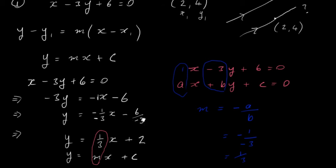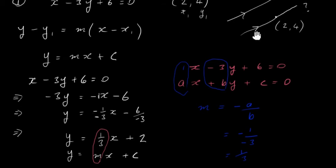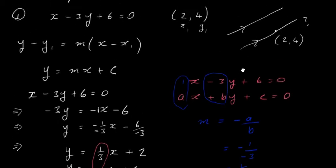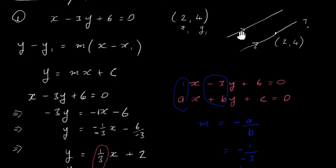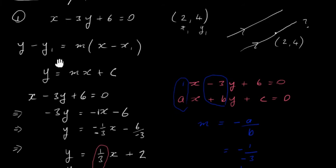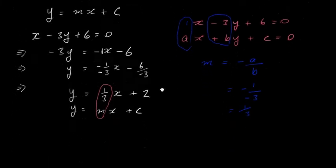Now let's find the equation of the parallel line. We have the point (2, 4) on the line and we've just worked out that the slope is one-third. So we substitute into y minus y1 equals m times x minus x1: slope is one-third, x1 is 2, and y1 is 4.